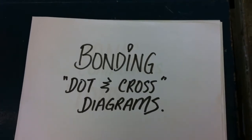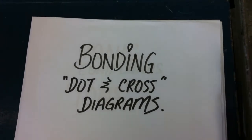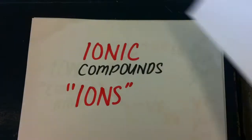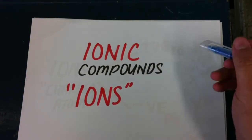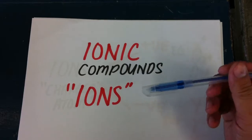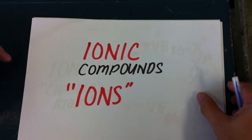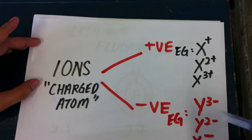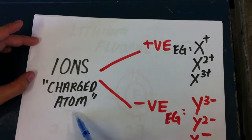Okay guys, this is what I'm teaching now: bonding dot and cross diagrams. Let's start with the first thing - ionic compounds. Ionic compounds basically are compounds formed by ions, and ions are charged atoms. They can be positive or they can be negative.